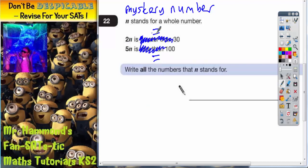If 2 lots of this mystery number was equal to 30, then that mystery number would need to be 15, because 2 lots of 15 equals 30.